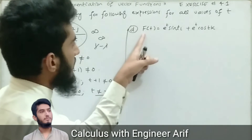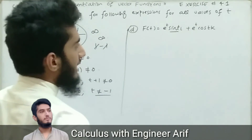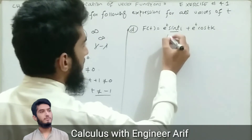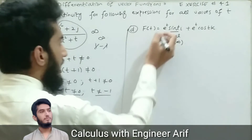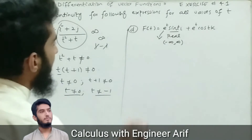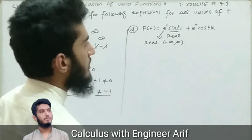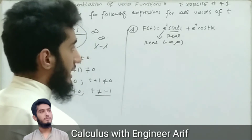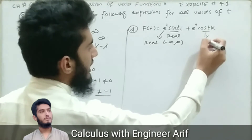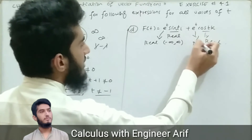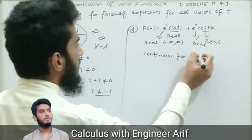Part d: f(t) = e^t·sin(t)i + e^t·cos(t)k. The sine function is a trigonometric function whose domain is all real values, from negative infinity to positive infinity. The exponential function also has domain all real numbers. Cosine likewise has domain all real numbers, and exponential is also real. Therefore the whole function is defined and continuous for all positive and negative real values of t.